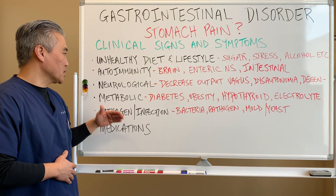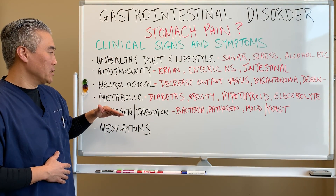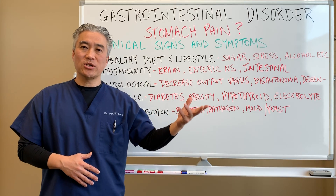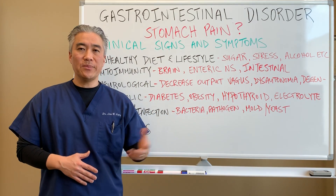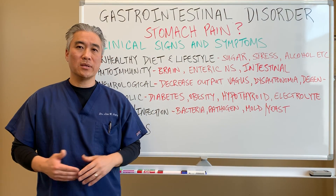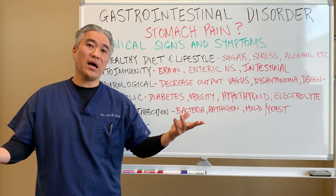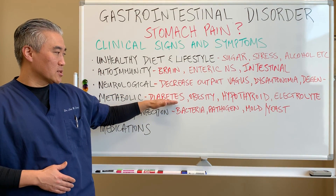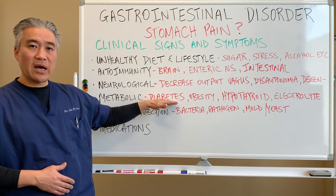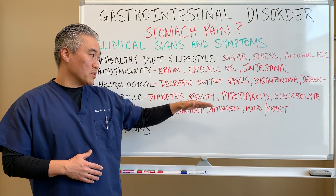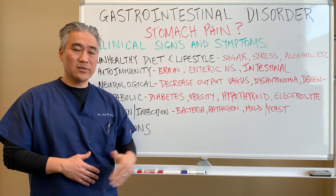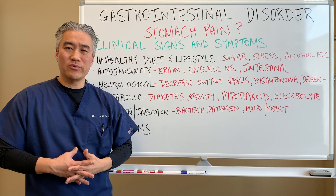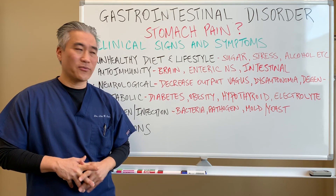Next, we ask about metabolic conditions, things like diabetes. Does the patient have type 1, type 1.5, or type 2 diabetes? We look at whether diabetes drives some of these GI issues. Sometimes obesity will drive that, because adipose tissue creates different hormones or hormonal imbalance.